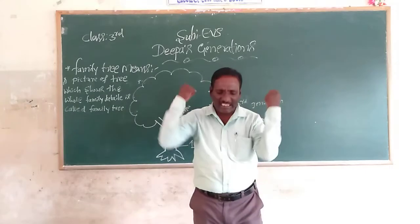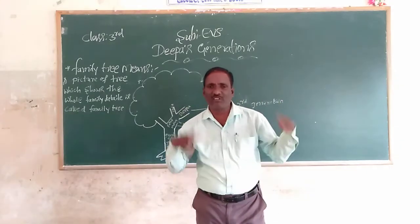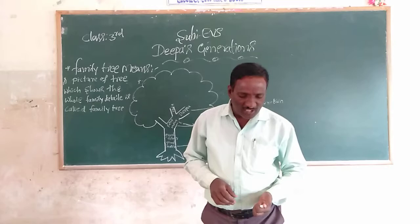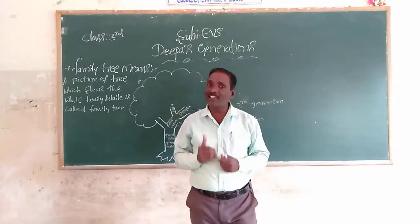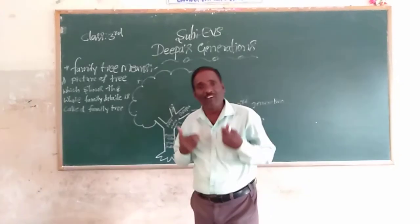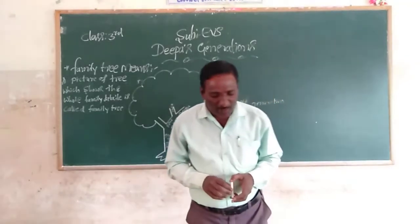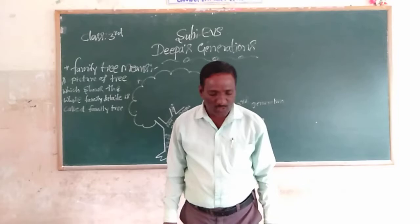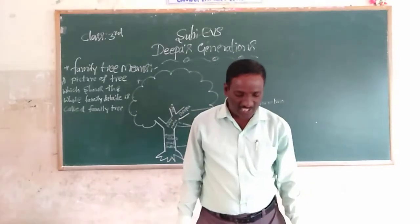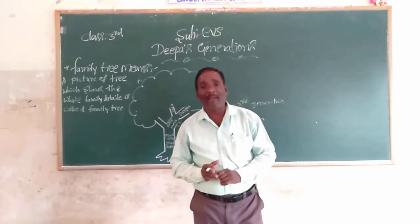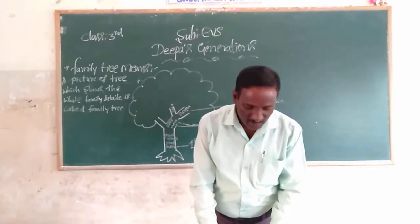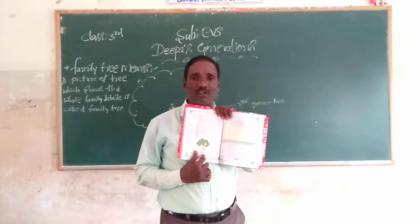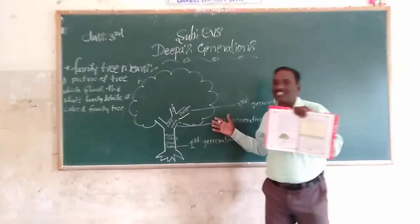Deepa said, 'Grandpa, I do not understand what you say.' Raju said, 'Deepa, I have learnt about the generations in our school — what is the generation, what is the family tree. Now I know. I can draw a simple family tree.' Grandpa said, 'Then you will understand it.' Deepa said, 'Raju, you told me about the family tree — will you please draw and show me?' Raju said, 'Okay,' and drew the family tree picture.